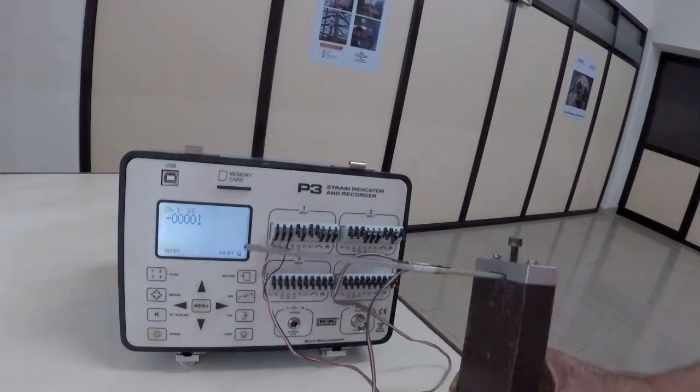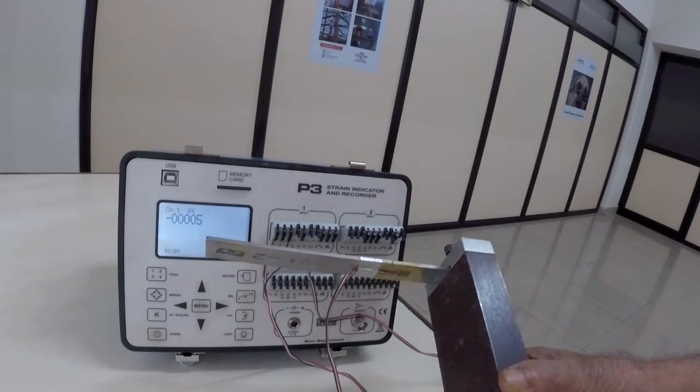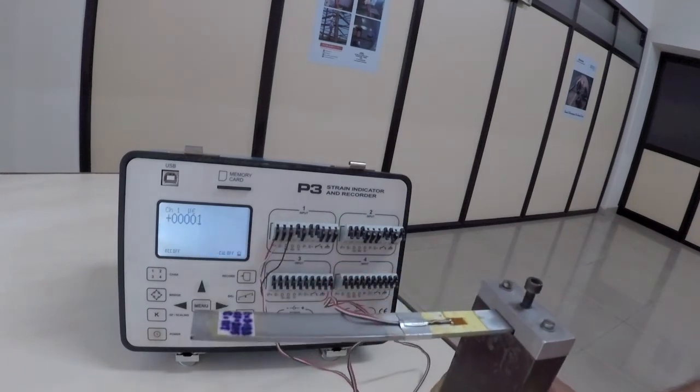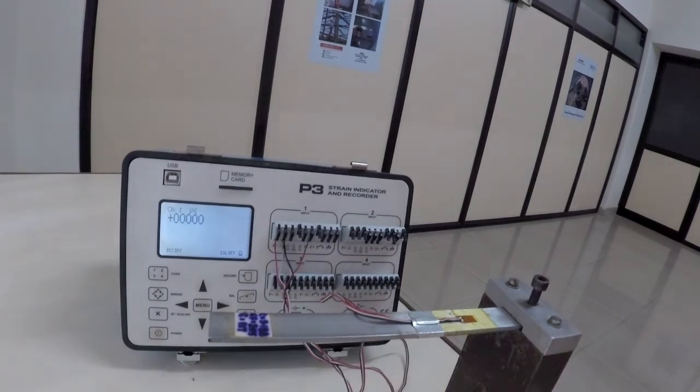A second gauge is bonded to the bottom surface of the same beam, and both gauges can be connected to the model P3 as a half bridge. Now when the beam is loaded with the same weight, the reading on the display is twice the earlier value.